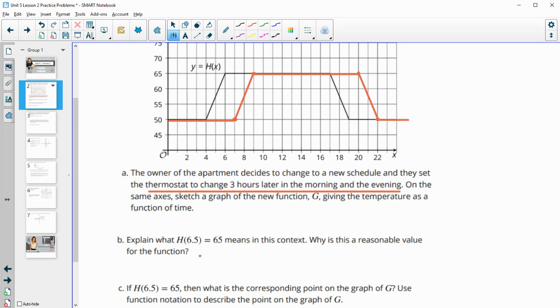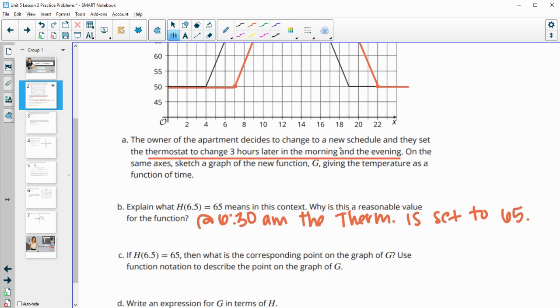So this is 6 in the morning, 6.5 would be 6:30. So at 6:30 a.m., the thermostat is set to 65 or is at 65, the temperature actually in the apartment. So the temperature is at 65.